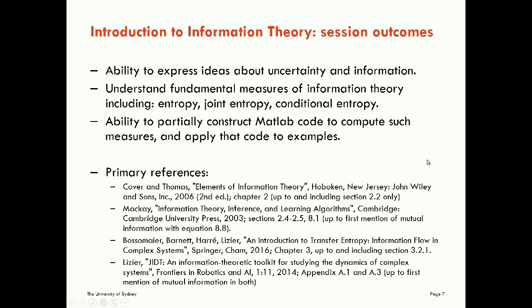Finally, the primary references for this lecture are essentially the four primary references for our course: Cover & Thomas, MacKay, Bossomaier et al., and my JIDT introduction paper. In the course materials and reading list I've shown you which sections out of these four apply to this lecture — they're all getting you to the same point, so you can pick any one of them for background reading. If you've got time, you may find it useful to compare between them as they take different perspectives. My own perspective is about using these for complex systems analysis, which probably aligns slightly better with the course, but you may be interested to see the more traditional treatment given by Cover & Thomas and MacKay as well.